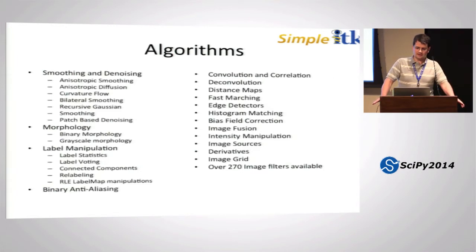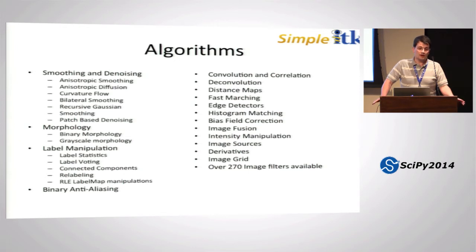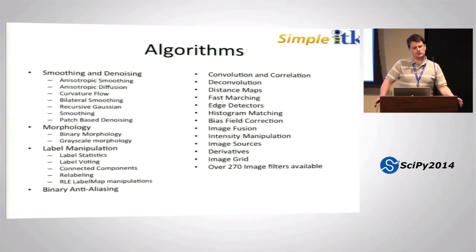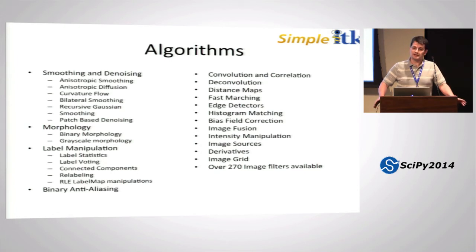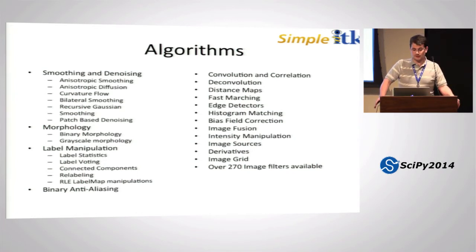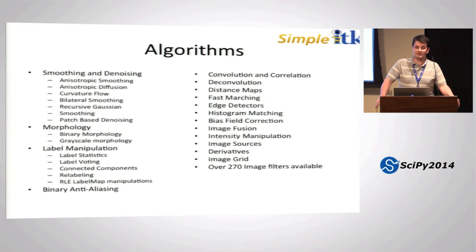Simple ITK has many algorithms from ITK, including smoothing and denoising (anisotropic diffusion, curvature flow, bilateral smoothing, mean and median), morphology filters (binary and grayscale: erosion, dilation, top hats, geodesic erosions, erosions and dilations by reconstruction), and label manipulation filters for computing statistics, label voting on neighborhoods, analyzing connected components, and relabeling. Standard image processing algorithms include convolution, deconvolution, distance maps, fast marching, edge detectors, Canny edge detectors, feature textures, bias field correction, and many more — over 270 image filters in total.